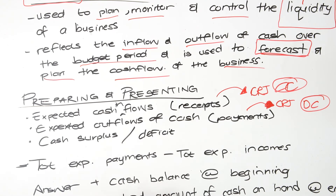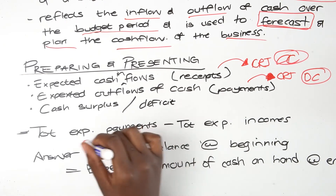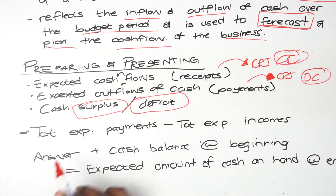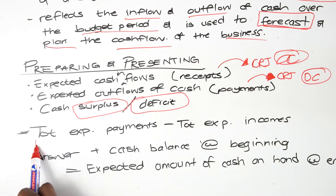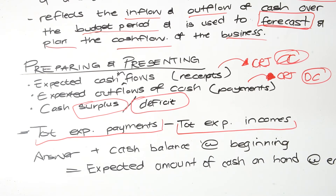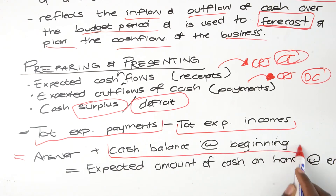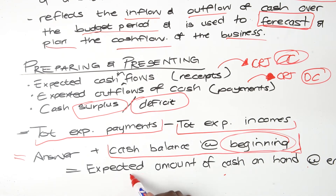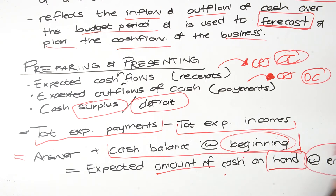The formula to find out is: your total expected payments minus your total expected incomes, and the answer you get from here is added to the cash balance at the beginning. This is very important — it is equal to the expected amount of cash on hand at the end of the financial period.